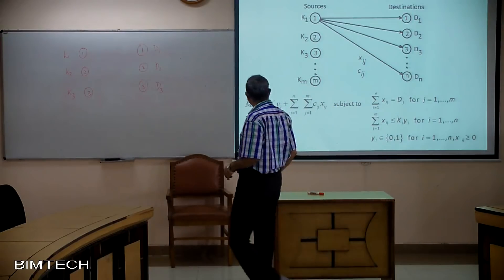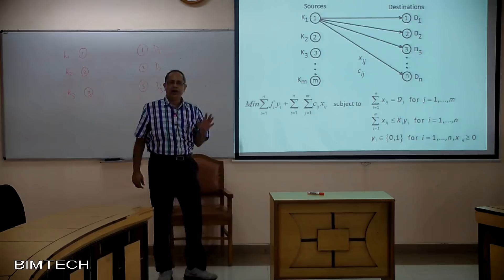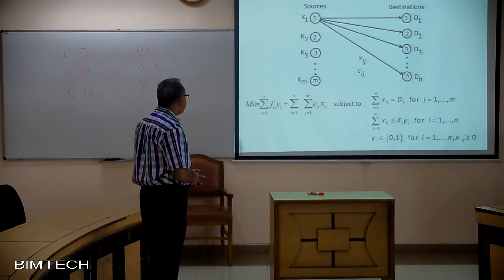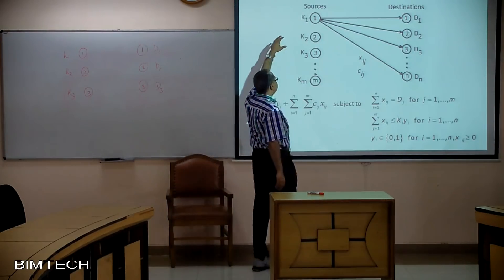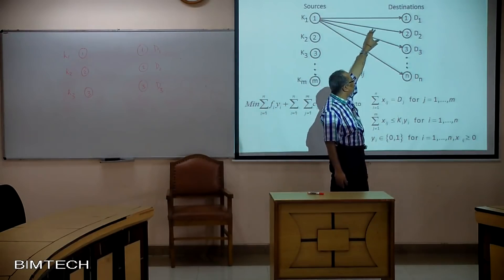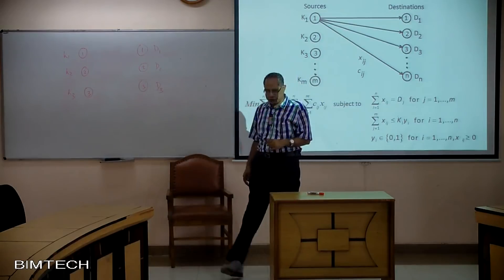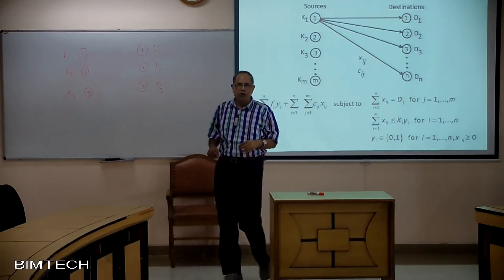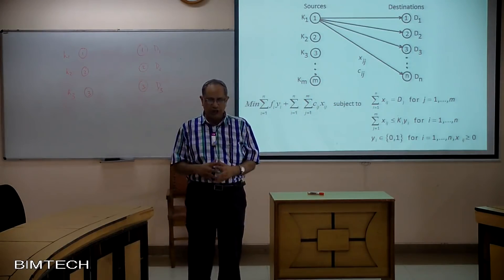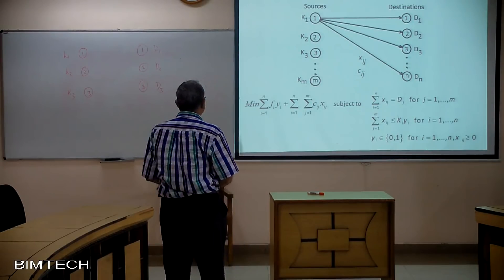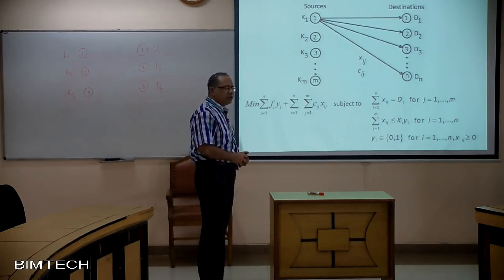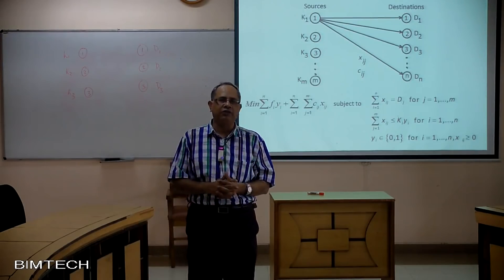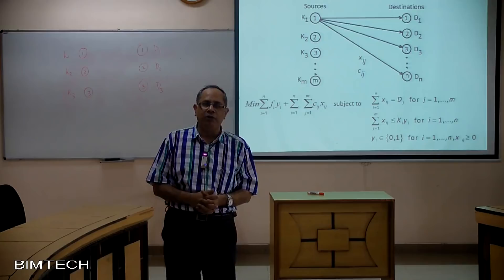Now this network diagram that you see here is straight away taken from the previous module. I hope you remember that we have a set of sources or supply locations, we have a set of destinations or demand locations, and any path or arrow represents the flow of goods from the supply to the demand location. Let me now explain how this particular model is different from the previous one.